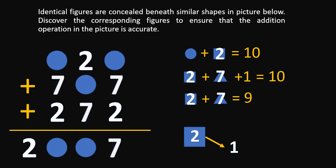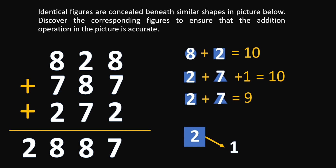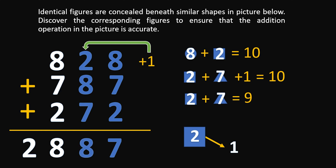We replace all the triangles on the left side with 7. Looking at the right side again, circle plus 2 equals 10, so the circle must have a value of 8. We replace all circles with 8 and test the solution: 8 plus 7 is 15, plus 2 is 17 — so that's 7, carry plus 1 into the second column. 1 plus 2 equals 3, plus 8 is 11, plus 7 is 18 — so that's 8, carry plus 1. 1 plus 8 is 9, plus 7 is 16, plus 2 is 18 — write down 8, carry plus 1 into the fourth column. But in the fourth column we have a 2, so this is an incorrect solution.